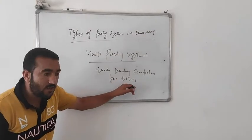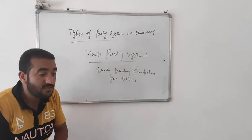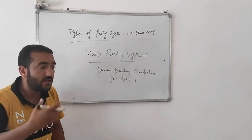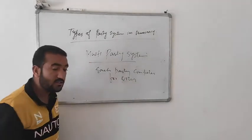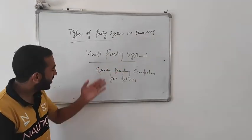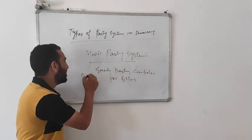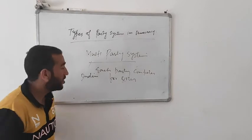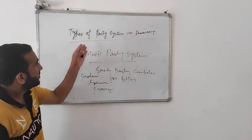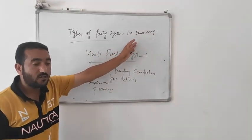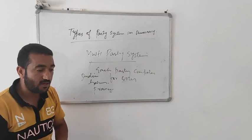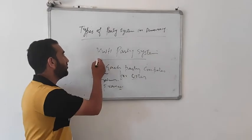In a multi-party system, coalitions play a very important role. Examples include India and Germany, where there are multiple parties. This is all about the types of party systems in democracy. You are requested to also go through the topic of political parties in India yourself. We hope you enjoyed this video lesson. Thanks.